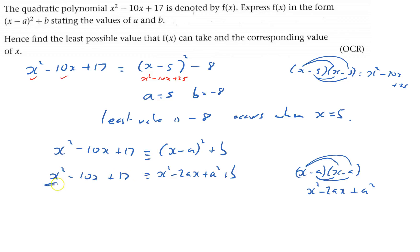The x squared coefficient is 1, and it's still 1 there, so nothing happens there. And here we've got 2a must be that 10. So 2a equals 10, and so a will be 5.